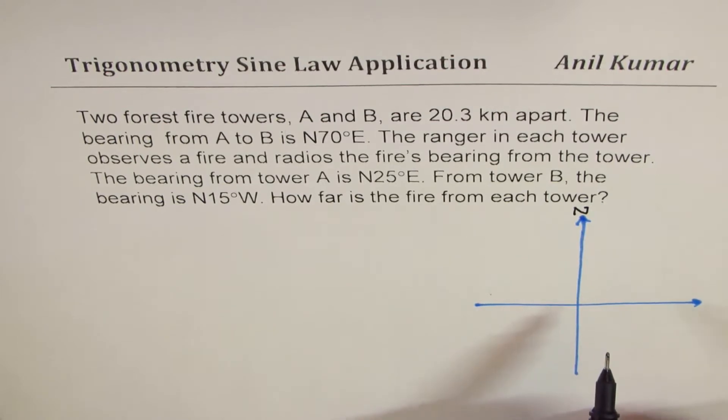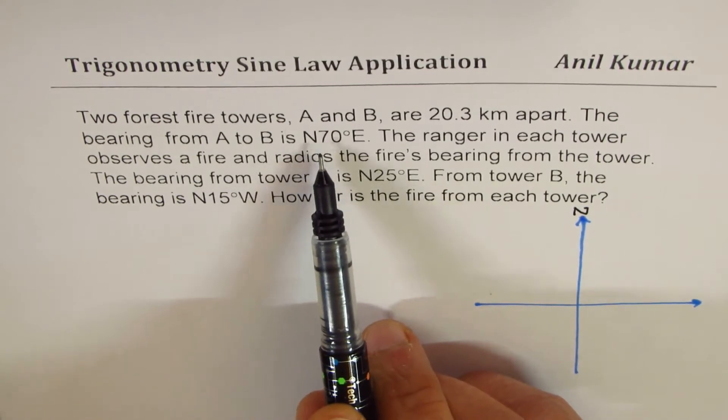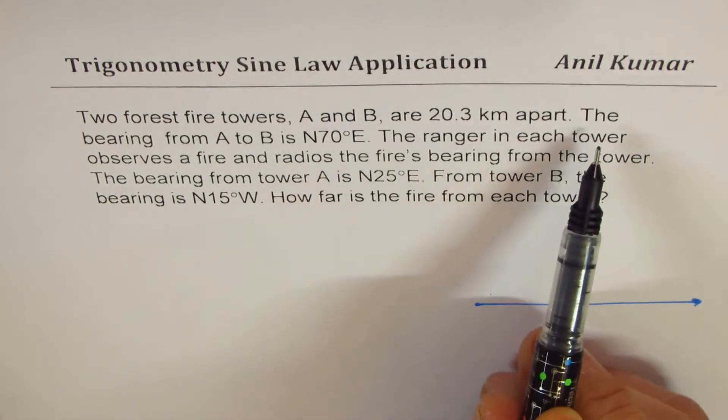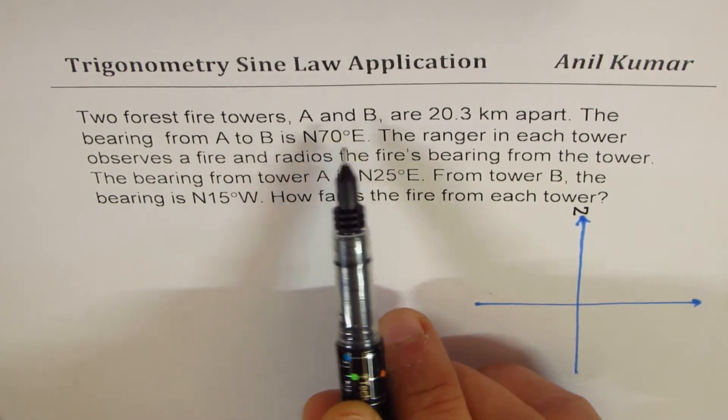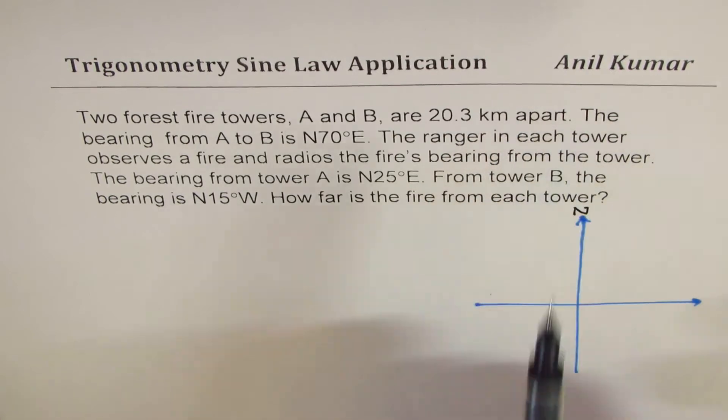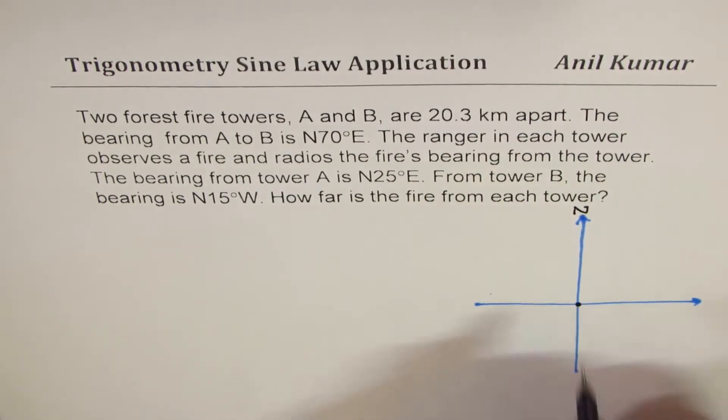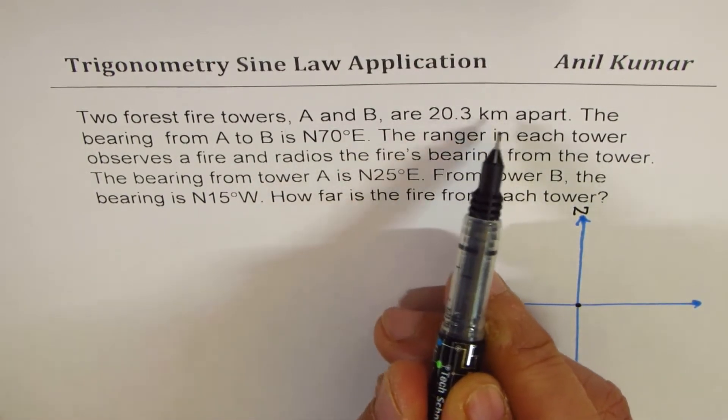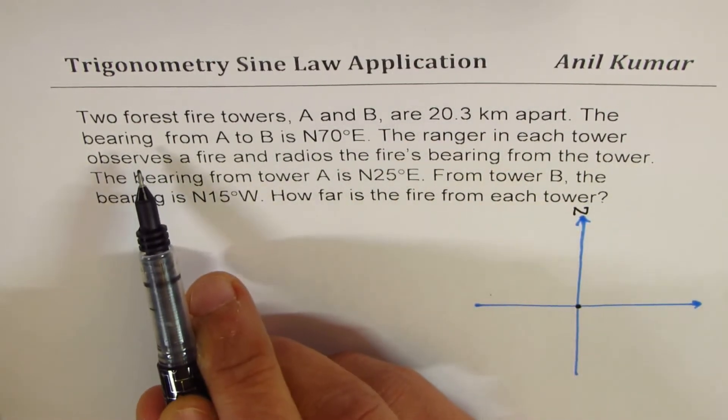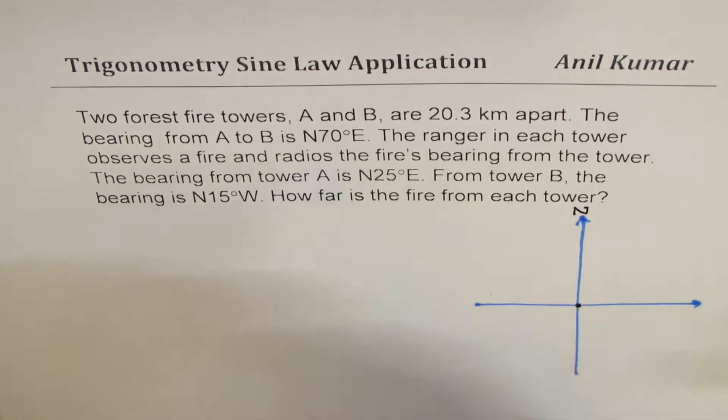Now in this particular case, what we are given here is angle from the north, 70 degrees east. The two forest fires, A and B, are 20.3 kilometers apart. So let's take A at the origin. Now B is 20.3 kilometers apart. Bearing from A to B is from north, 70 degrees east.